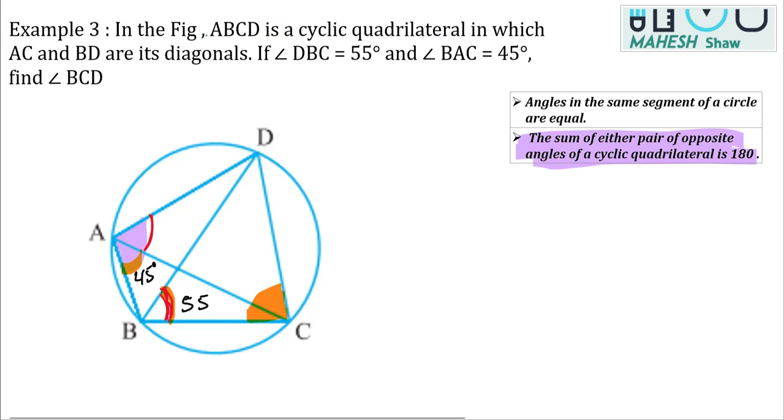As you can see clearly that both the angles are subtended by this arc DC and are on the same segment. They are both the angles on the same segment and angles on the same segment are equal.